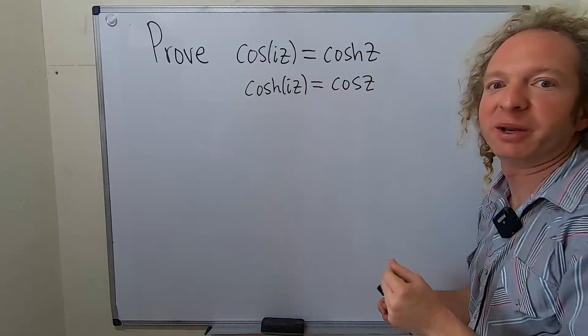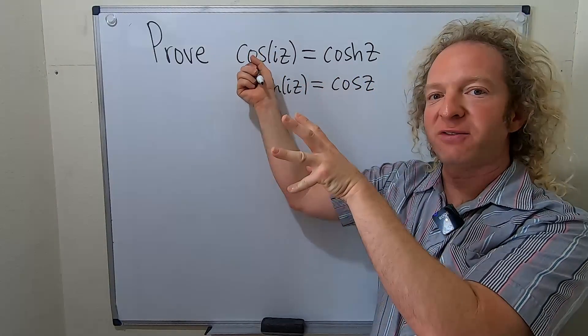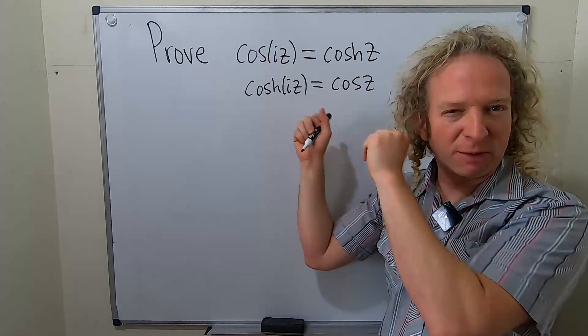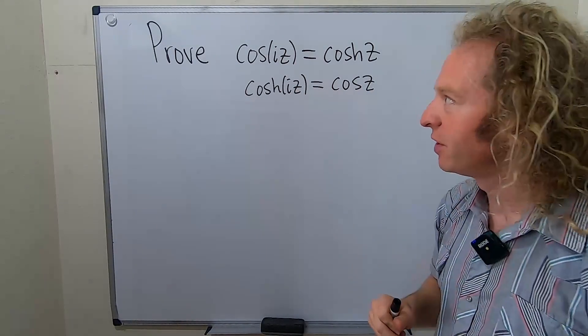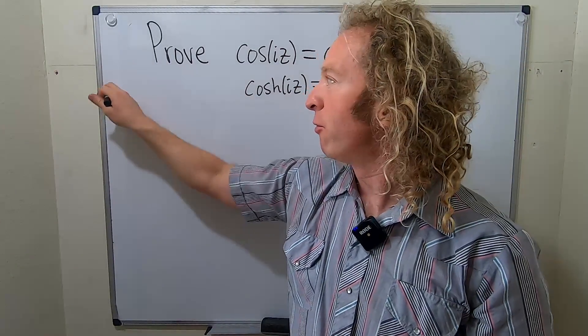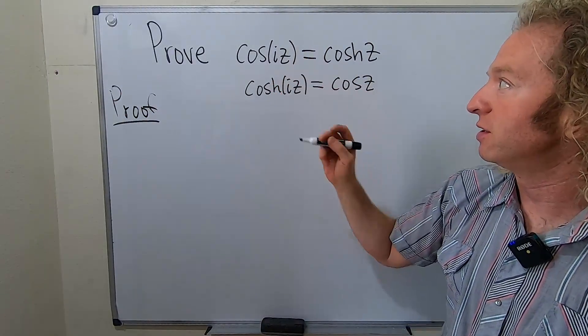So it turns into the other one. It's kind of cool. You plug in iz into the cosine and your cosine function turns hyperbolic. You plug in iz into your hyperbolic function and it turns into a regular trig function. Let's go through the proof. Before we do, though, we do have to recall the definitions.